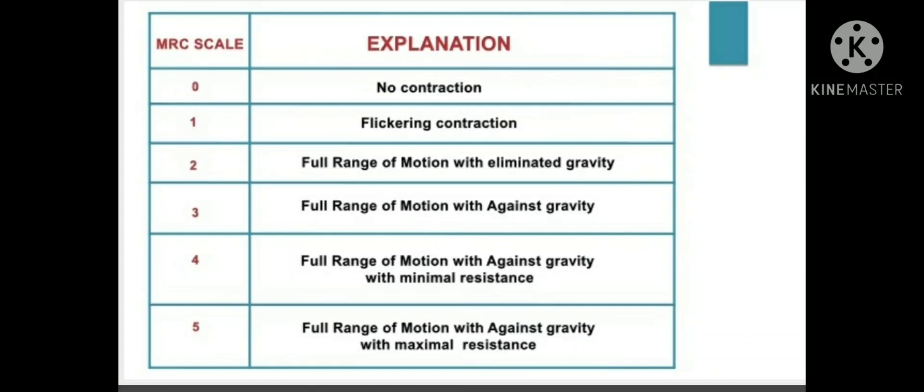Let us discuss the MRC scale in detail using the biceps as an example. The biceps is responsible for flexion of the elbow. To check the MMT of the biceps, ask the patient to flex the elbow. Grade 0: the patient is not able to perform elbow flexion, nor can the therapist palpate any contraction. Grade 1: the patient is not able to perform elbow flexion, but the therapist can palpate a muscle contraction of the biceps.